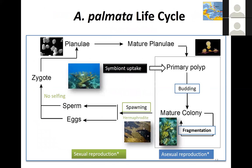Let me introduce the life cycle of corals. We start with a mature coral colony. These are hermaphroditic, releasing eggs and sperm bundles once a year to the water column, but they do not self-fertilize — eggs are fertilized by sperm from a different coral genotype. The larvae develop in the water column and, once mature enough, seek out the bottom, metamorphose into a primary polyp, and take up new Symbiodinium from the water column. Through asexual budding, they build a mature colony. Mature colonies can also fragment through physical disturbances like storms, with fragments reattaching and growing into new colonies — creating large clonal fields of host genotypes.